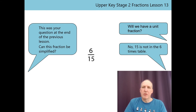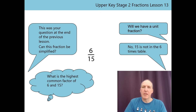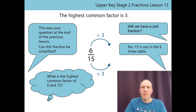Think about your times tables. We want to know the highest common factor of 6 and 15. Pause if you want some thinking time. Have you found it? Did you get 3? 3 is a factor of 6 because 6 is in the 3 times table, and 3 is a factor of 15 because 15 is in the 3 times table. To simplify 6/15ths, we need to divide both the numerator and denominator by 3. 6/15ths simplifies to 2/5ths in its simplest form.